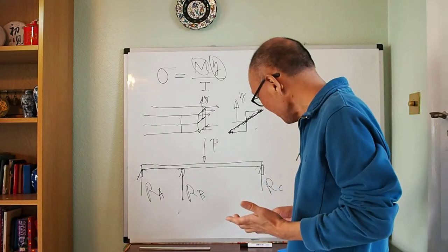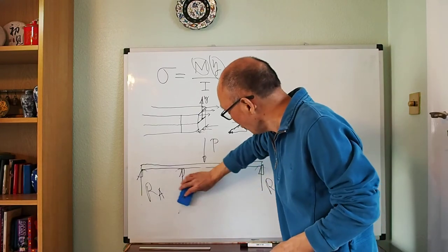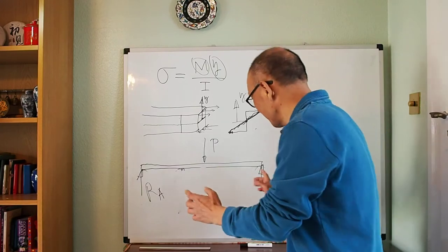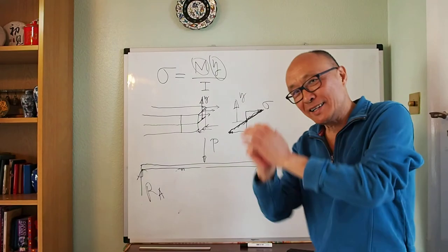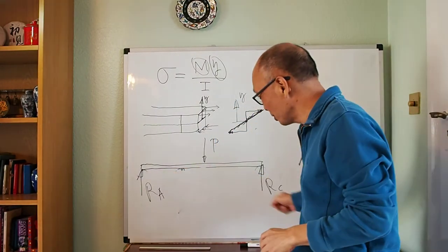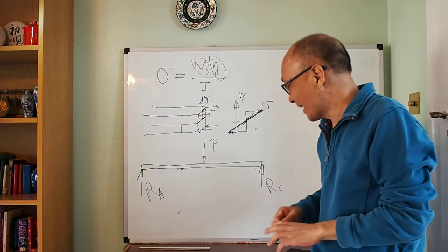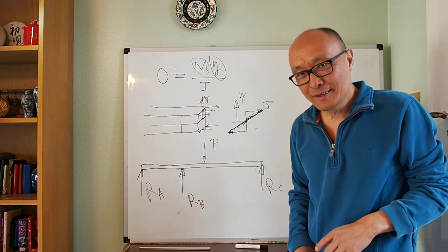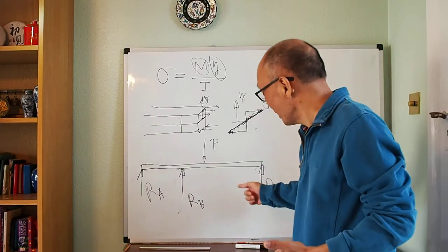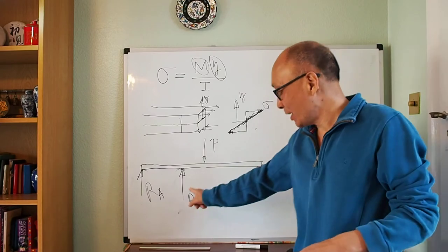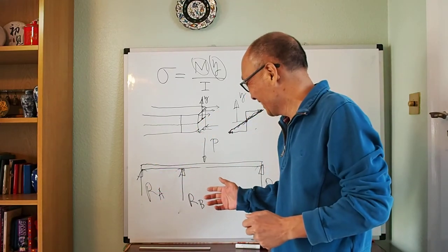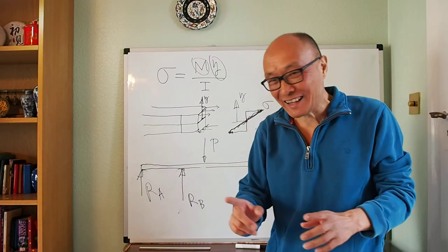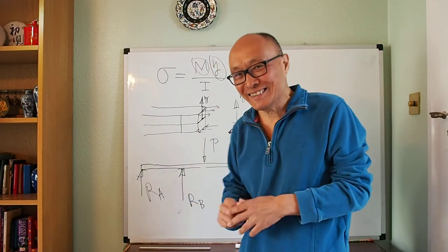Let me explain why. When you have only two supports, this force is shared between the two — that's the simple case. Now imagine two persons each holding one end of the beam, sharing the force equally. You then add a third person in between. The question is: how do the three of them share this load? The answer is: you don't know.